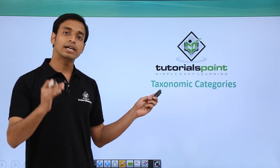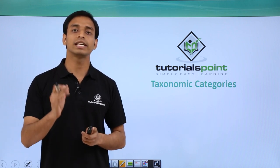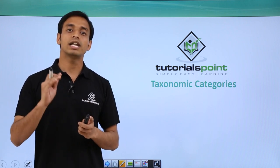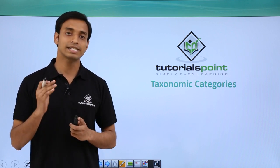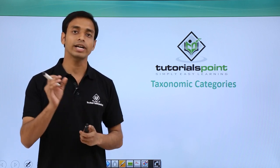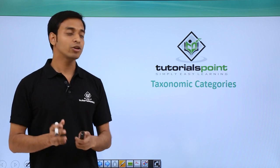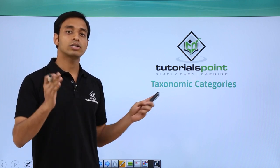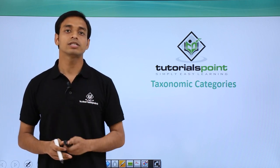Now this classification system is not a single step process. It involves a number of steps and each of these steps represents a rank or a category. Now we are going to discuss seven such categories.